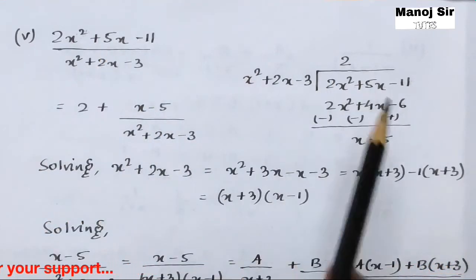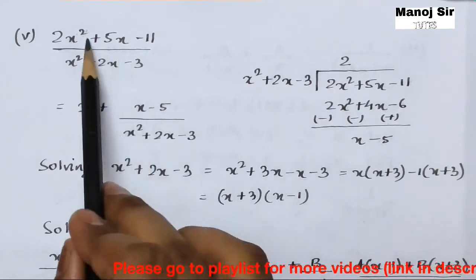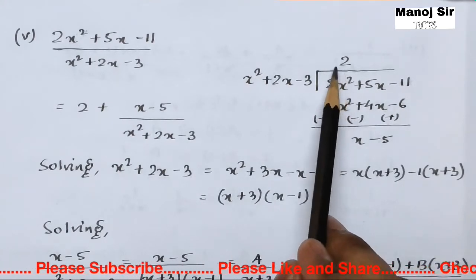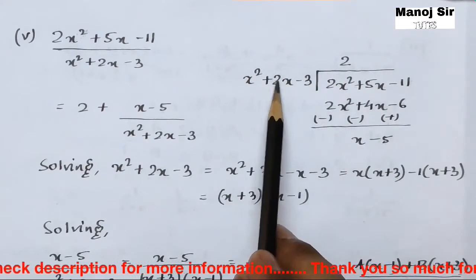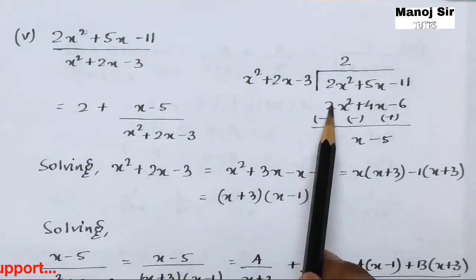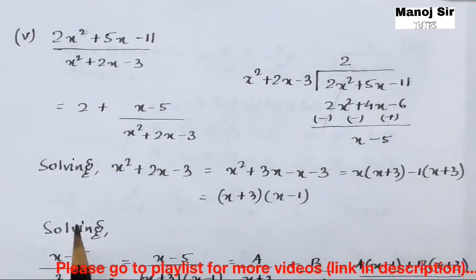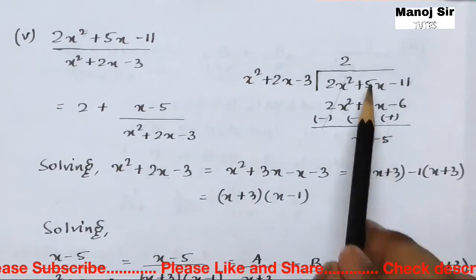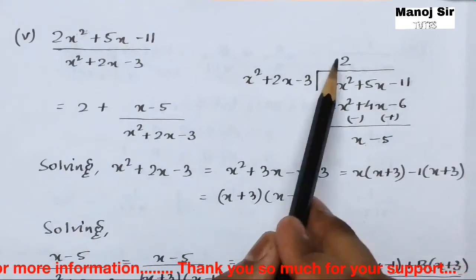We divide 2x²+5x−11 by x²+2x−3. The denominator is multiplied by 2 to match the leading term, giving 2x²+4x−6. Changing the sign: −2x²−4x+6. After cancellation: 5x−4x = x, and −11+6 = −5. So the quotient is 2 and the remainder is x−5. We rewrite the expression as 2 + (x−5)/(x²+2x−3).